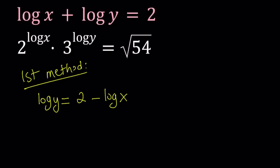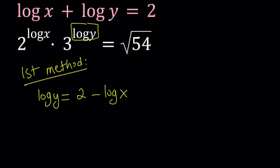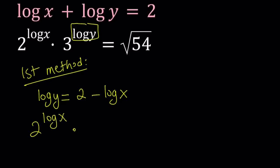And then we're going to substitute this into the second equation. Notice that we have 3 to the power log y here, so we're going to replace that with 2 minus log x. So that gives us 2 to the power log x times 3 to the power 2 minus log x equals square root of 54.